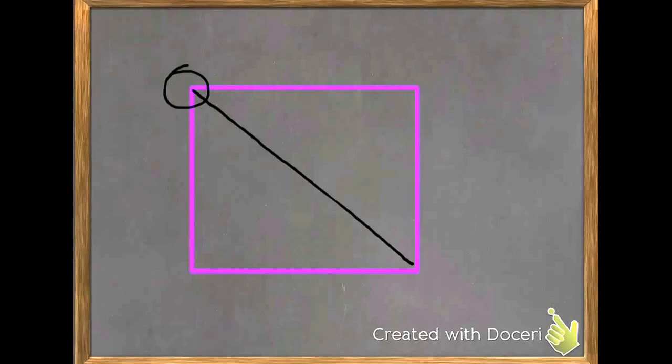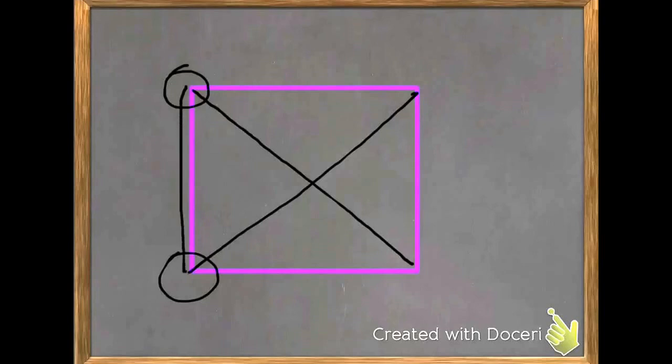I could also connect this vertex to the vertex across from it, and that would also be a diagonal. I can't connect this top vertex to this bottom vertex because that wouldn't be a diagonal. It's not going across the shape. That would just be a side, which we know that this polygon has four sides.